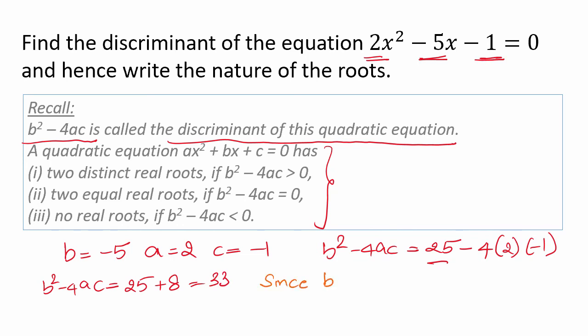Since b² - 4ac equals 33, which is greater than 0, we have two distinct real roots.